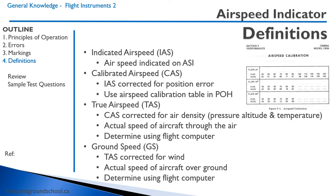We can use an airspeed calibration table found in the pilot operating handbook. For example, looking at flaps up at 90 knots indicated airspeed, the actual calibrated airspeed is 87 knots. Conversely, at the low end at 40 knots indicated airspeed, the actual calibrated airspeed is 43 knots.